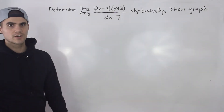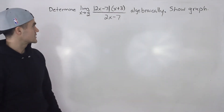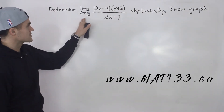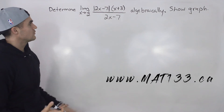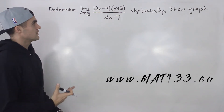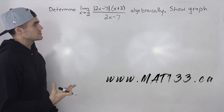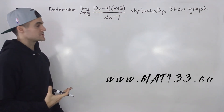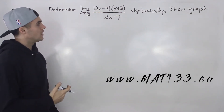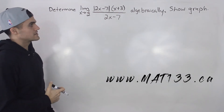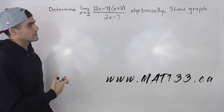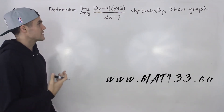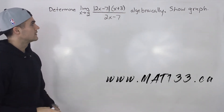Welcome back everybody. Patrick here. Moving on to the next question, we have to determine the limit as x approaches 7 over 2 of the absolute value of 2x minus 7 times x plus 3, all over 2x minus 7, algebraically, and we have to show the graph as well.